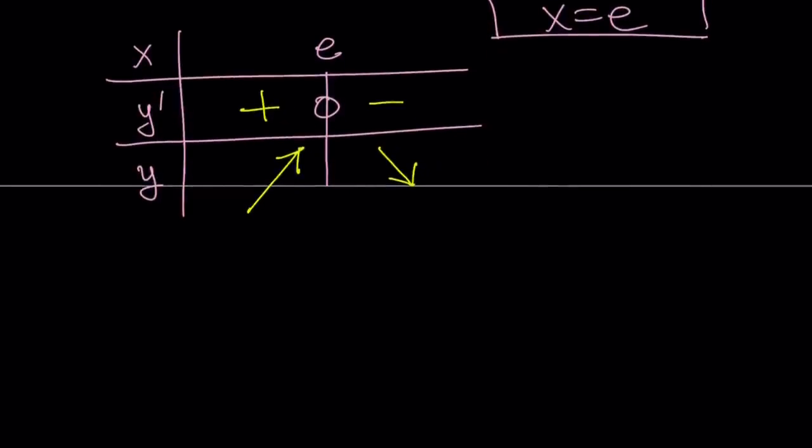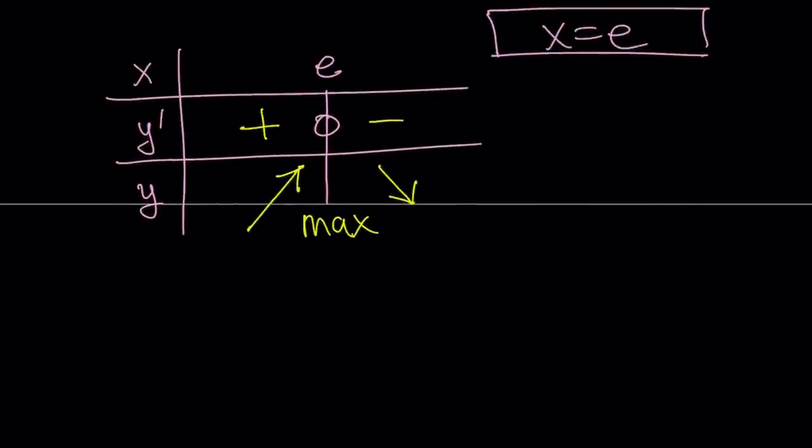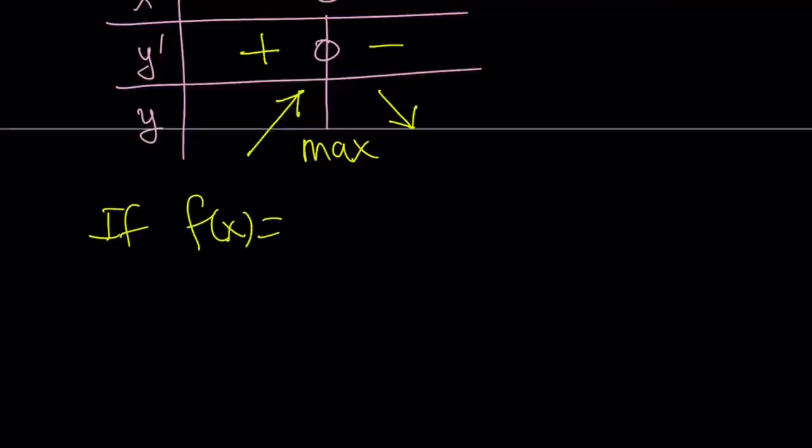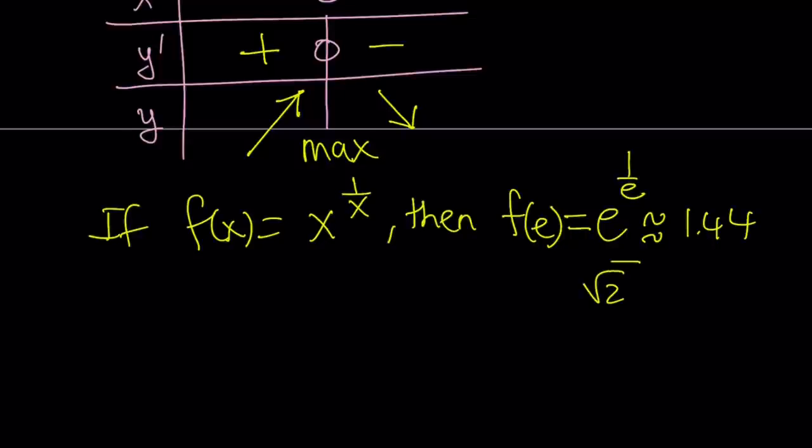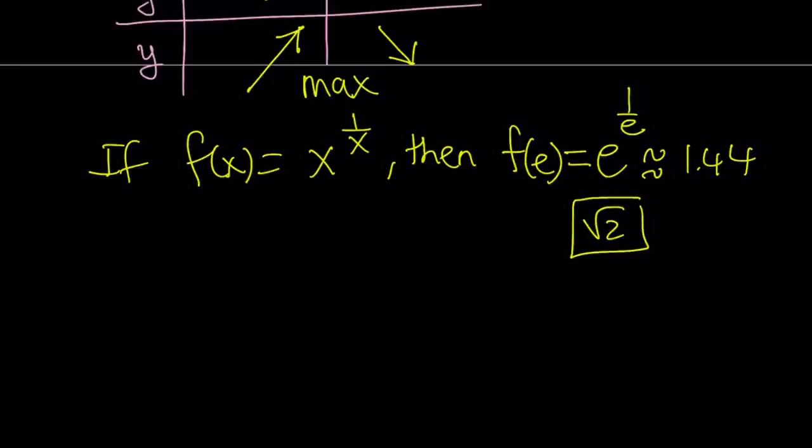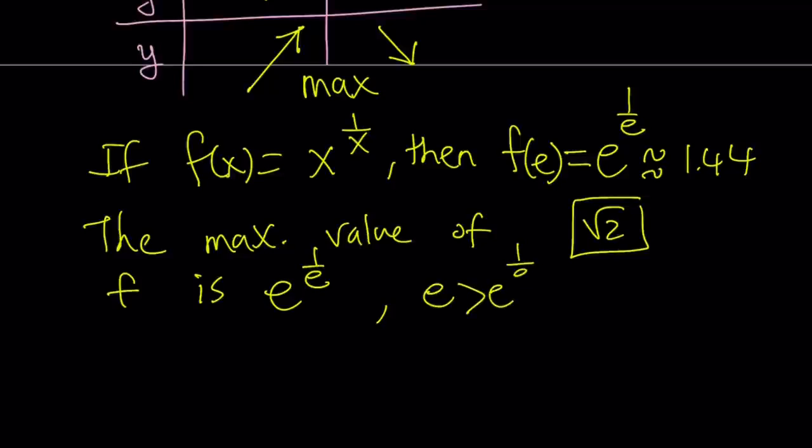Great. So, I have a max here at x equals e. And if, if f of x is equal to x to the power 1 over x, then, I'm kind of being a little rigorous here by writing the function notation. f of e is going to be e to the power 1 over e. And that is approximately, I did it for you, 1.44. I think in another video, which is this one, we compare this number to square root of 2. And they're pretty close. If you look at the square root of 2, you're going to notice. But you can definitely look at this video here for that. So, the maximum, the max, which means maximum, value of f is e to the power 1 over e. And just notice that e is greater than e to the power 1 over e because obviously 1 over e is less than 1. So, e to the power 1 is greater than that.